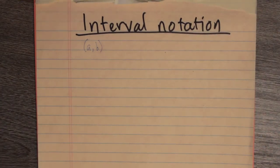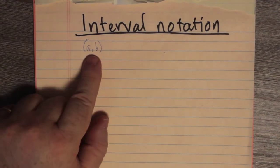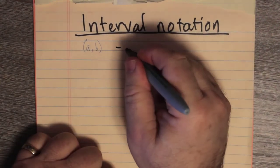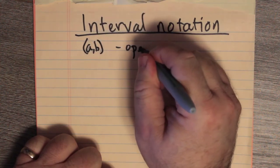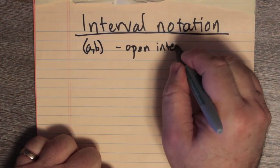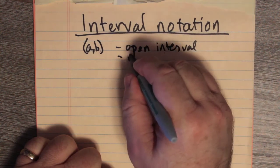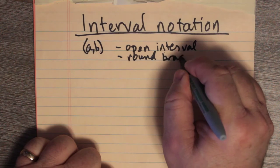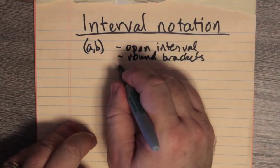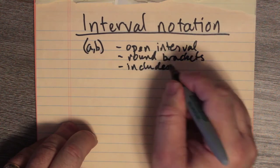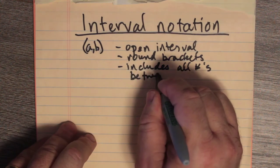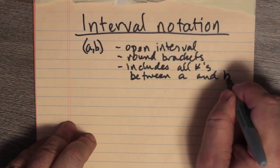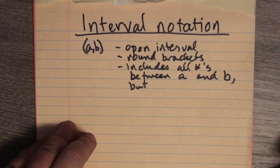I'm going to talk today about interval notation, and we're going to start with an interval AB. AB is known as an open interval. It's symbolized by round brackets. It includes all numbers between A and B, but not the endpoints themselves.